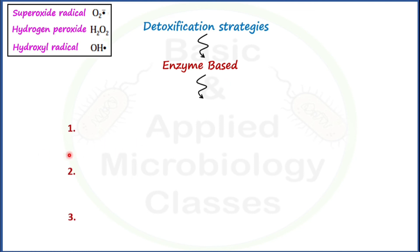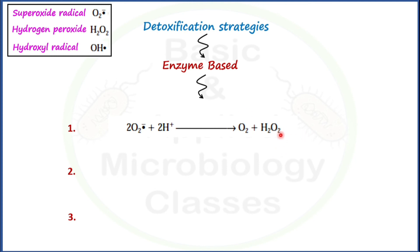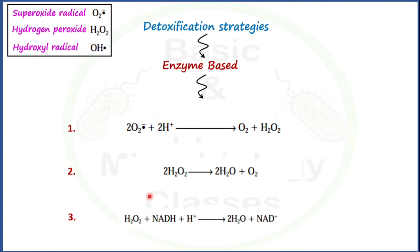The first reaction shows how superoxide radical gets neutralized: it is converted into oxygen and hydrogen peroxide. You may be thinking hydrogen peroxide is again a toxic oxygen derivative — yes, it is a powerful oxidizing agent. So it is further neutralized in another reaction and gets converted into neutral products like oxygen and water. A third category involves hydrogen peroxide, which in the presence of a reduced substrate like NADH can also be neutralized into water, producing the oxidized form of NADH. All these reactions lead to neutralization of the toxic oxygen species.